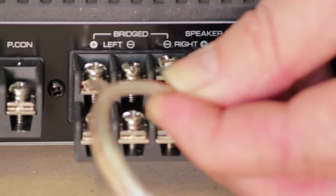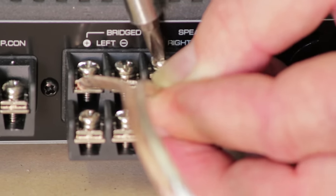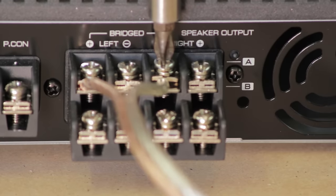Then we're going to take the negative wire and connect that to the right negative speaker terminal. And we're going to tighten that down real good.